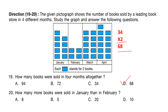Question number 20. How many more books were sold in January than in February? In February there are 4 blocks and in January there are 9 blocks. The difference is 9 minus 4 equals 5 blocks. Each block stands for 2 books, so 5 multiplied by 2 equals 10. Total 10 more books were sold in January than February. Answer is option D.